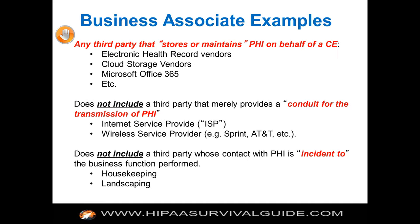You need to think through some of these relationships. Any third party that stores and maintains PHI on behalf of the covered entity — this was made clear in the omnibus rule — includes electronic health record vendors on the cloud, cloud storage vendors, Amazon S3, Microsoft OneDrive, and Google's storage. All of these are now business associates.